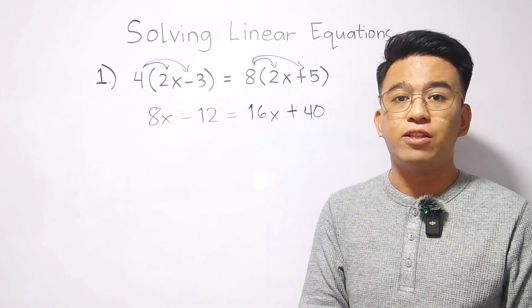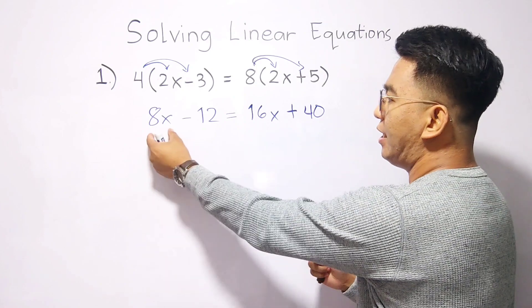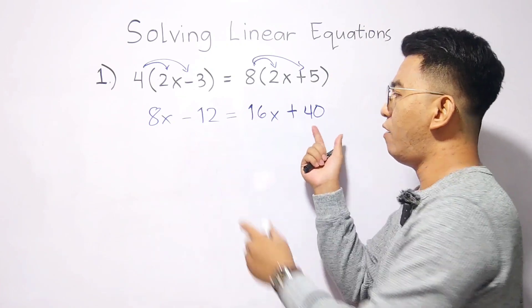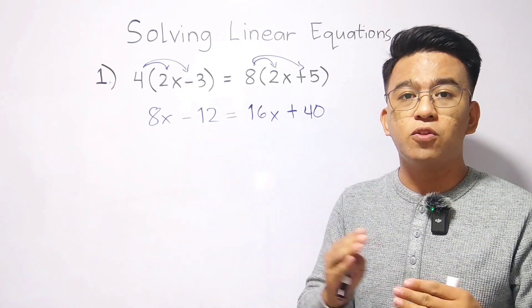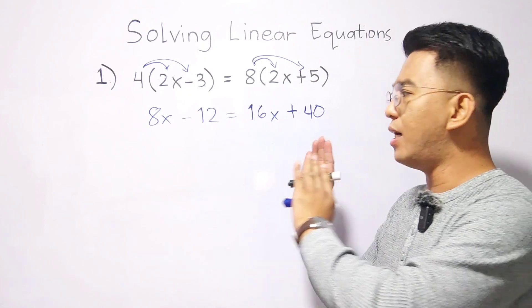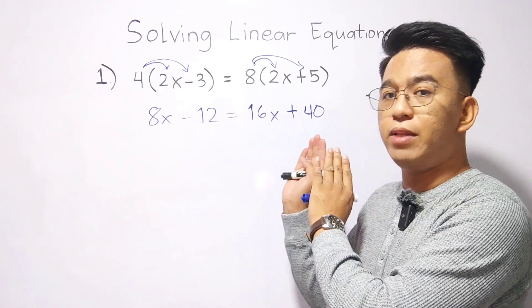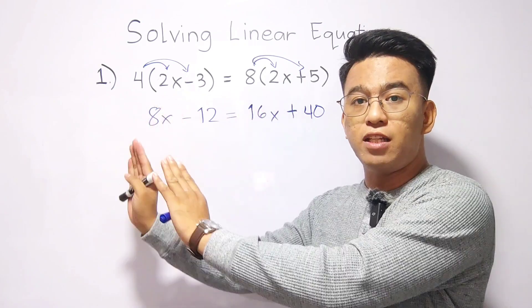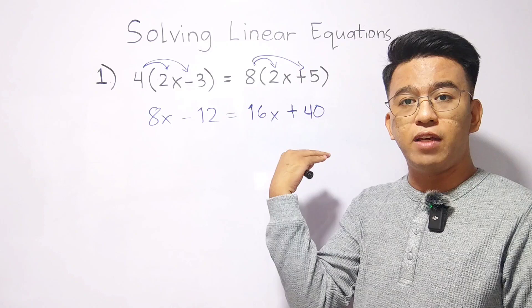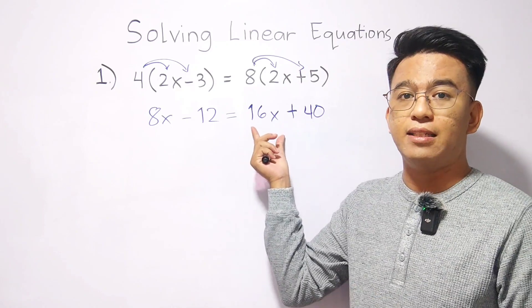Now, we need to combine like terms. Here, we need to combine 8x and 16x, as well as negative 12 and 40. Basically, normally what we do is we always move the variable x to the other side, or on the left side of the equation. But this time, we can move 8x to the other side of the equation, because 16x is bigger.